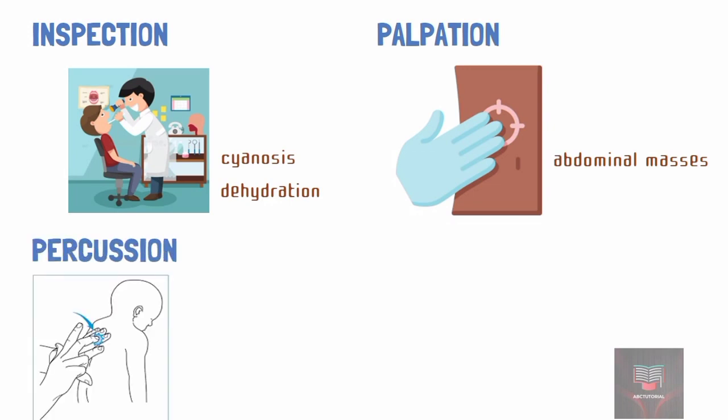In percussion, the examiner taps on the body surface with the fingertips and listens to the resulting sound. Hollow cavities or spaces produce a different sound than solid organs.